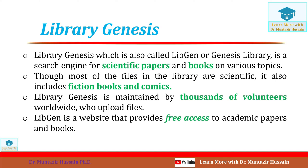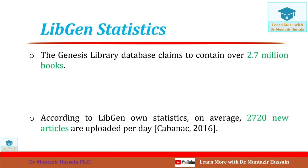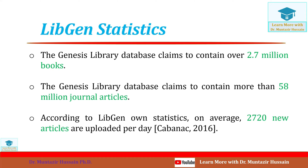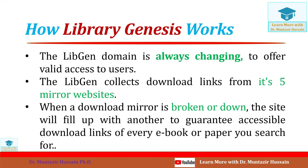LibGen is a website that provides free access to academic research papers as well as books. According to Library Genesis statistics, the database contains around 2.7 million ebooks, and Library Genesis claims to contain more than 58 million general research papers. Around 2,720 new articles are uploaded to Library Genesis per day.